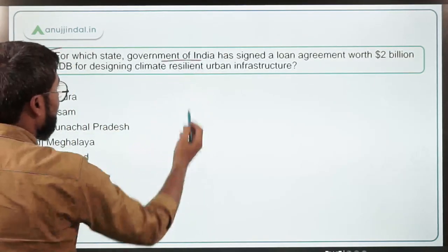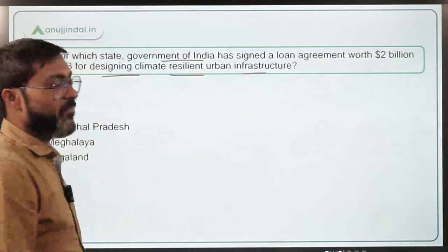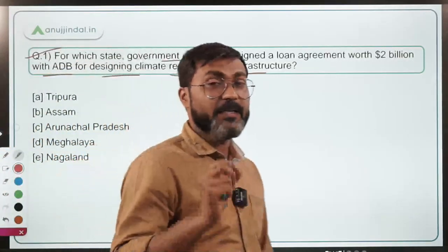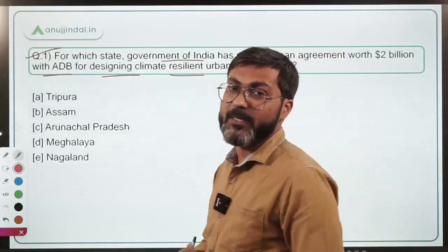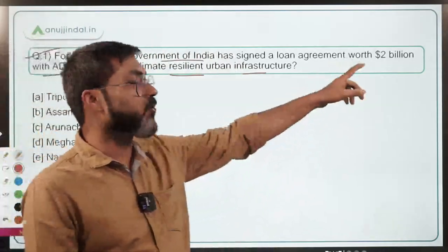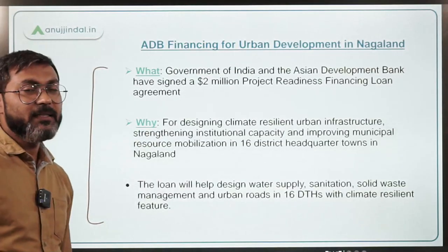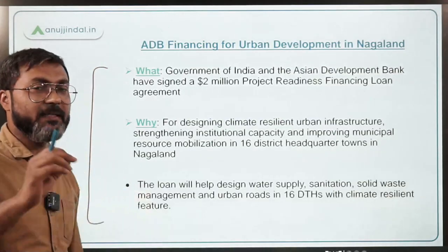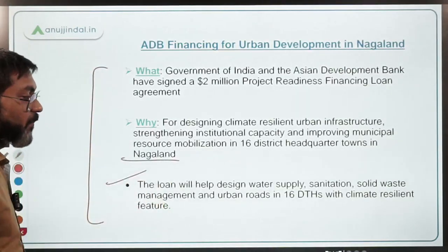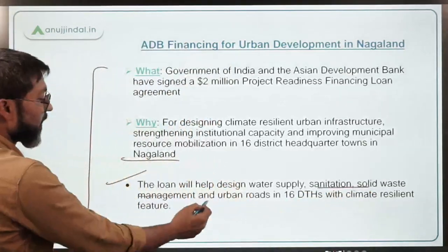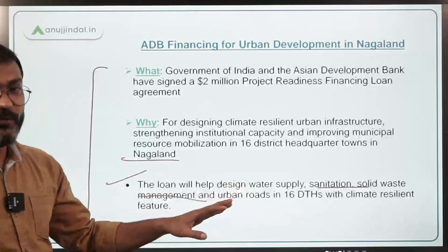The first question: for which state has the Government of India signed a loan agreement worth two billion dollars with the Asian Development Bank for designing climate-resilient urban infrastructure? The answer is Nagaland. This loan will help in designing water supply and sanitation, solid waste management, and urban roads in sixteen district headquarter towns of Nagaland.